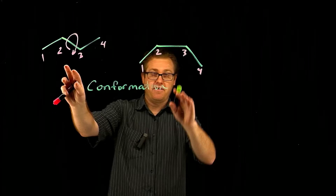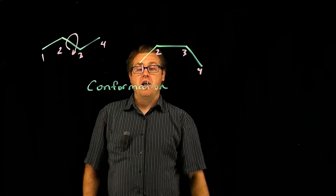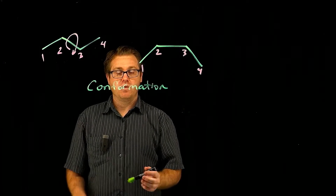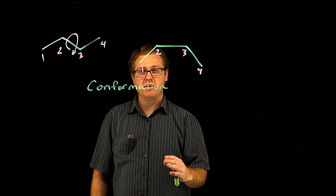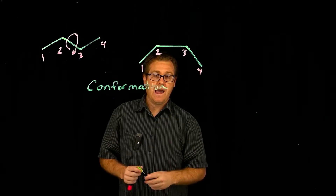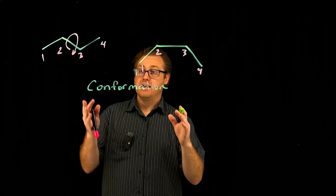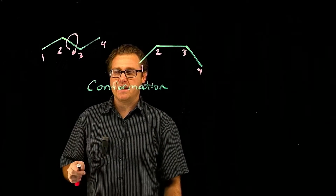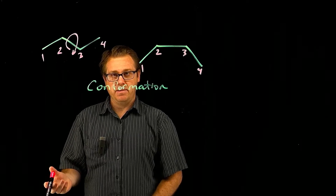These two different conformations are going to have different energy levels. One's going to be higher in energy, one's going to be lower in energy. And so we need a way to help us draw these different conformations to help us assess their stability.